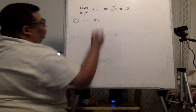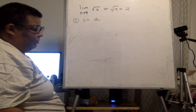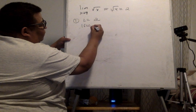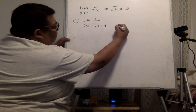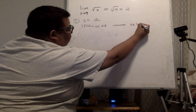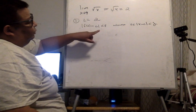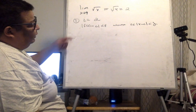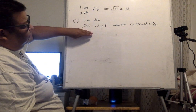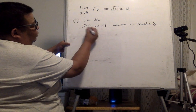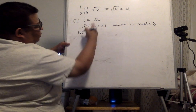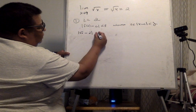In the next step, the scratch work, we need to remember we're trying to find these quantities: |f(x) - L| less than epsilon, whenever |x - c| less than delta. So f(x) is square root of x, and L is 2, so we have |√x - 2| less than epsilon. We need to relate this expression with the |x - c| expression.